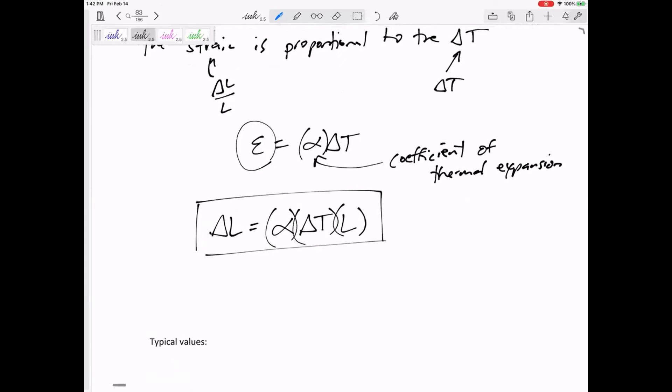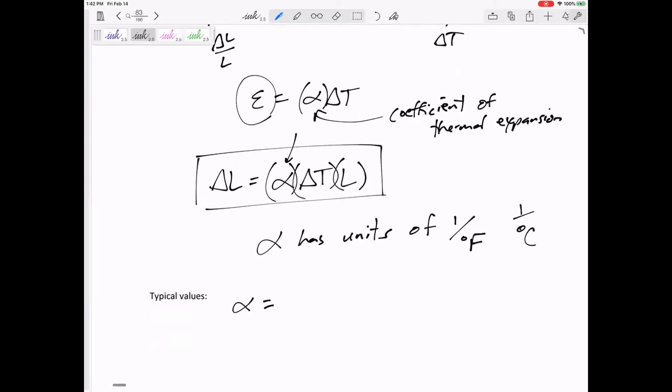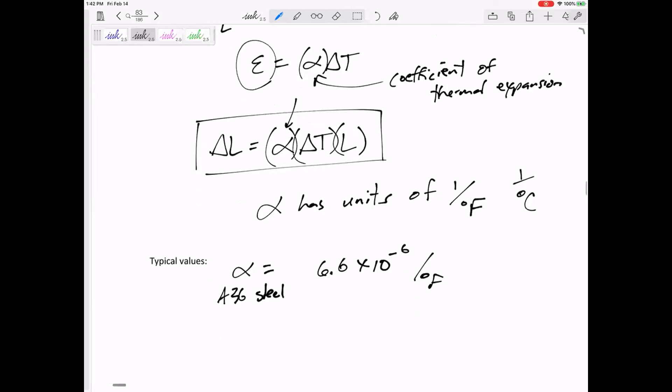Alpha delta T L is the change in length due to temperature. The coefficient has units of—it's kind of interesting—one per degrees Fahrenheit or per degrees Celsius, in order for our units to work out. Typically these are very, very small. For A36 steel, this alpha is 6.6 times 10 to the negative 6 per degrees Fahrenheit. For concrete, 8.0 times 10 to the negative 6 per degrees Fahrenheit.